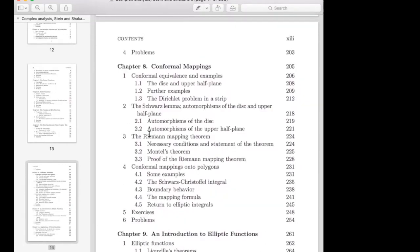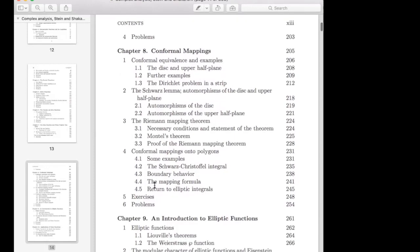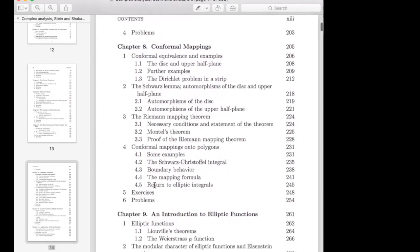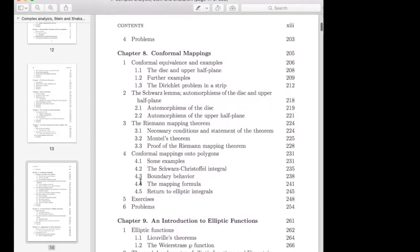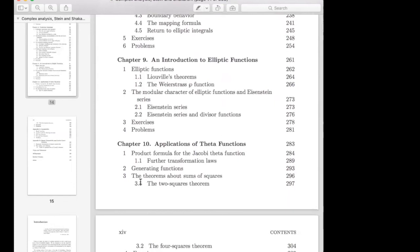And then they have a chapter on conformal mappings. They discuss the Dirichlet problem. They prove the Riemann mapping theorem. There's a little bit more in this book about Schwarz-Christoffel mappings to polygons and a little bit about elliptic integrals. That's really nice to have in this book.